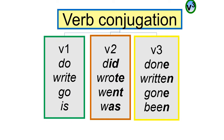Verb Conjugation Formula: For state tenses, V1 verbs are shown in italic with the last two letters bold for V2, and the last letter bold for V3. The verb's first letter is also bold to indicate verb state.